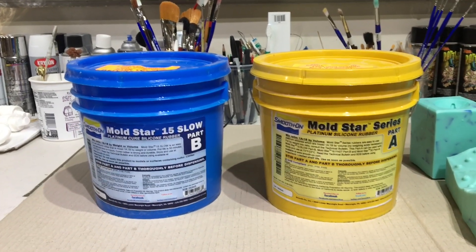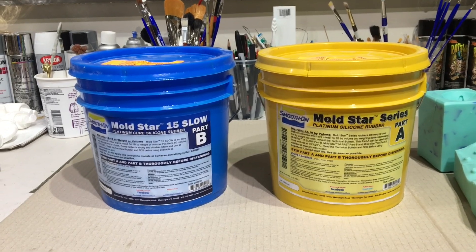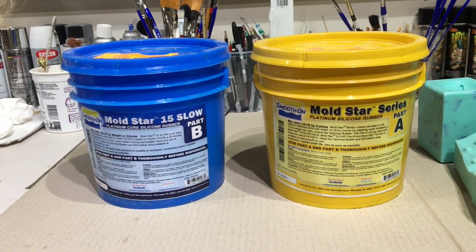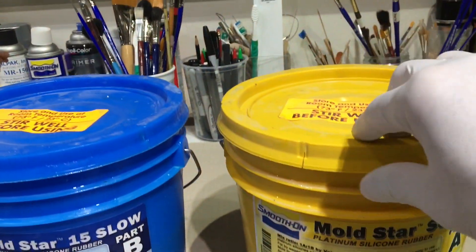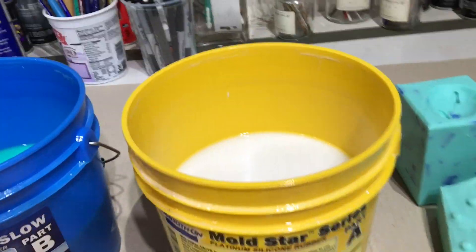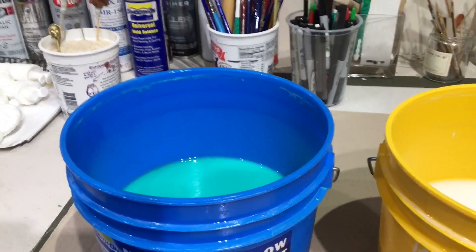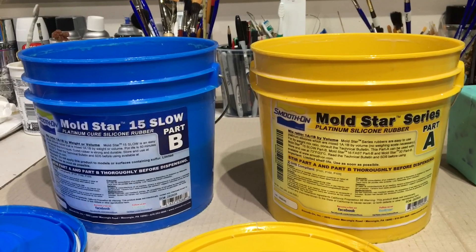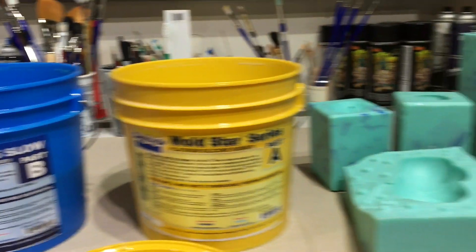So now we are going to mix and pour the silicone. I am using a product by Smooth-On called Mold Star 15. This is a two part platinum cure silicone rubber. We have part A here and part B here. You mix these in equal amounts by volume. Let it cure for a handful of hours.